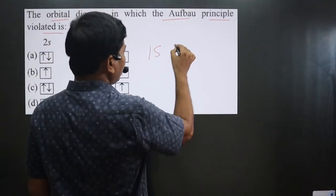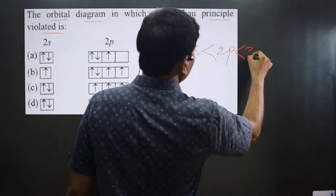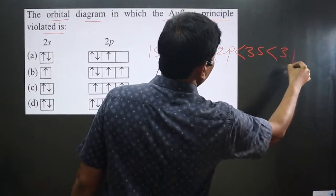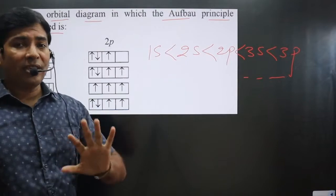The order we have 1s orbital, then we have 2s orbital, then we have 2p orbital, then 3s orbital and 3p orbital. These orbitals are arranged in the increasing order of their energy.